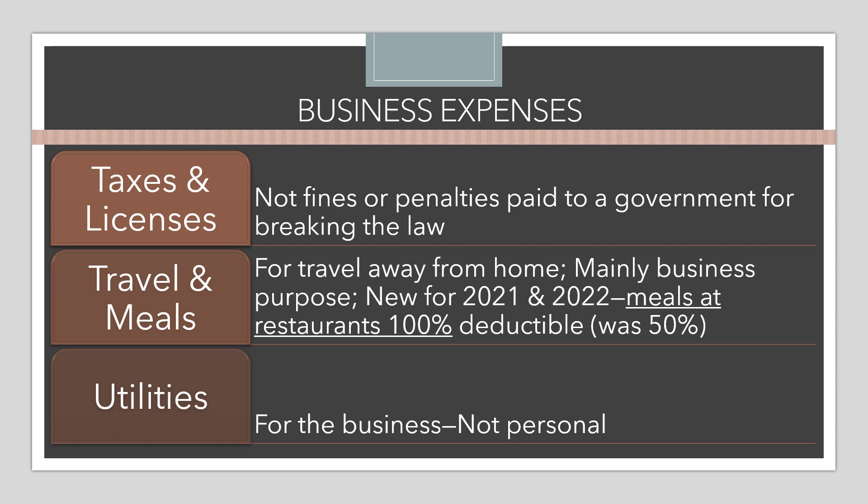New for tax years 2021 and 2022, meals at restaurants are deductible at 100%. This is different from prior years when you could only deduct 50% of meals. With COVID, the IRS is trying to encourage people to go out to restaurants and support that industry.